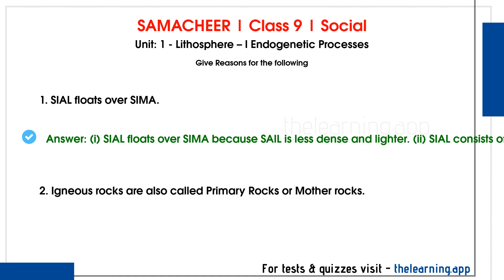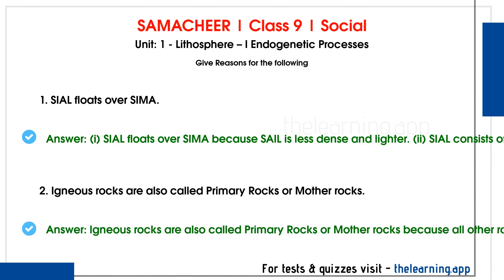Second question — why are igneous rocks also called primary rocks or mother rocks? Correct answer: Igneous rocks are called primary rocks or mother rocks because all other rocks — sedimentary and metamorphic rocks — are directly or indirectly formed from them. Magma cools and solidifies to form igneous rocks, and from these, all other rock types are derived.